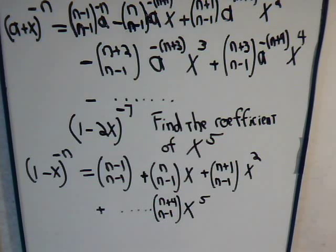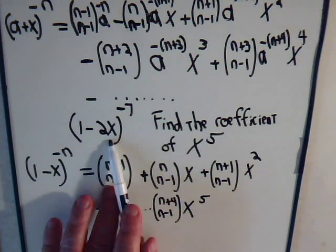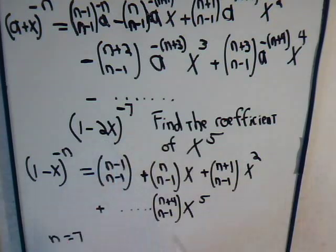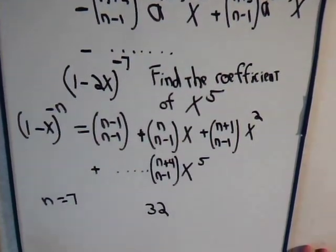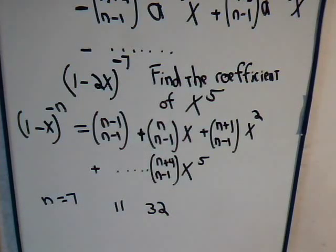We already have the minus sign here, so n is equal to 7. So here then, the coefficient for this term here, and all the terms are positive now. So we'll have 2 to the fifth power. That's 32. Then we have n plus 4. n is 7. So we're going to have the binomial coefficient 11 over 6, 7 minus 1 is 6.